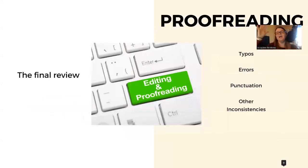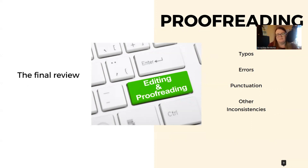Then we have the final review — proofreading. This is catching those typos and errors that you missed in all your other editing, because you will miss something. It's estimated that for every 10,000 words there are at least 10 errors in every book — even books published by very famous traditional publishing houses. But we try our best to proofread, check punctuation and any other inconsistencies, and correct them before final publication.